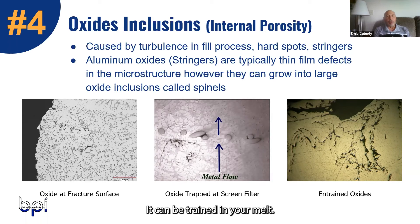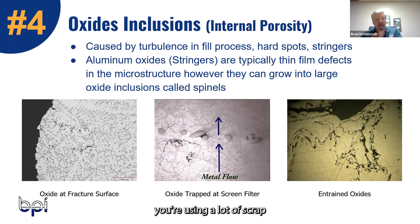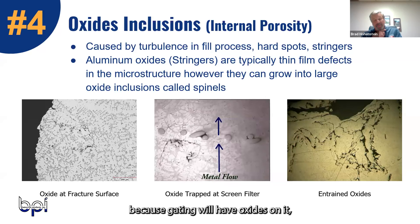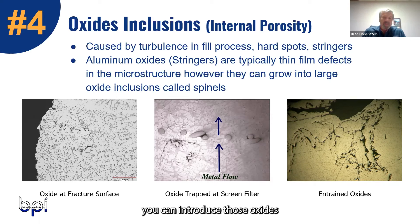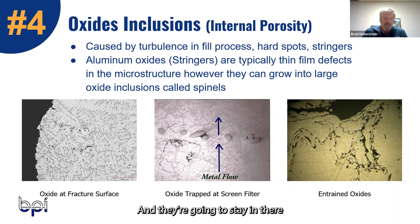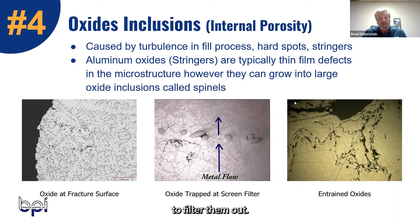Oxides can be entrained in your melt. So if you're using a lot of scrap, and particularly if you're re-melting gating — because gating will have oxides on it — you can introduce those oxides right into the melt, and they're going to stay in there unless you have some way to filter them out.